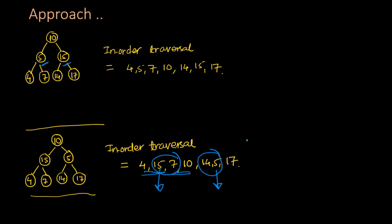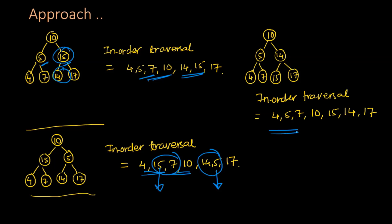This approach generally works in all cases, except when the nodes being swapped are placed adjacent to each other in the in-order traversal. For example, if nodes 14 and 15 were swapped by mistake, the in-order traversal array for this modified tree will have only one pair of elements — that is (15, 14) — where the first element is greater than the second. In such cases, you need to swap the first element with the second element from the same pair.